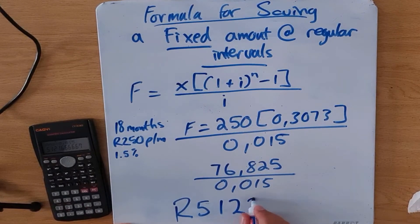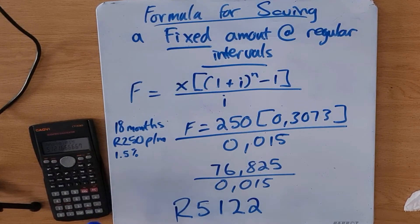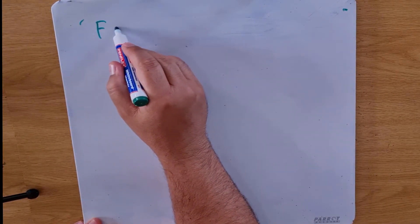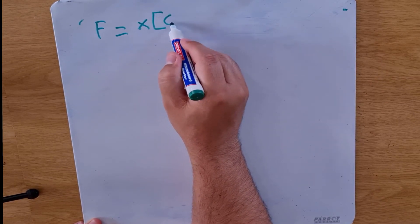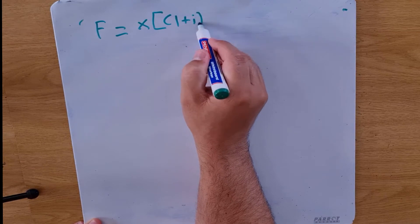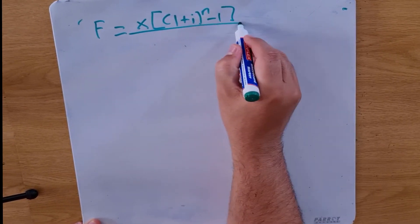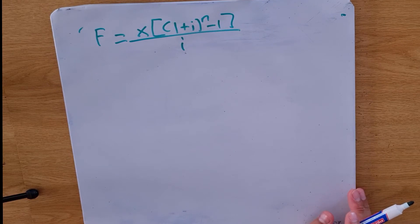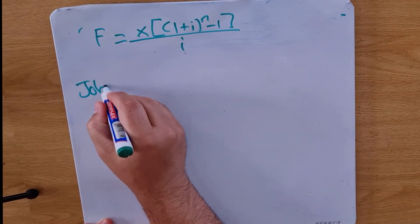Rounding that off, we get 5122. That is our answer: Sia deposited 250 rand a month over 18 months at 1.5 percent interest, and at the end of 18 months he will have a total of 5122 rand. So we know our formula — x times [(1+i)^n minus 1] over i — is the formula we use when saving a fixed amount.